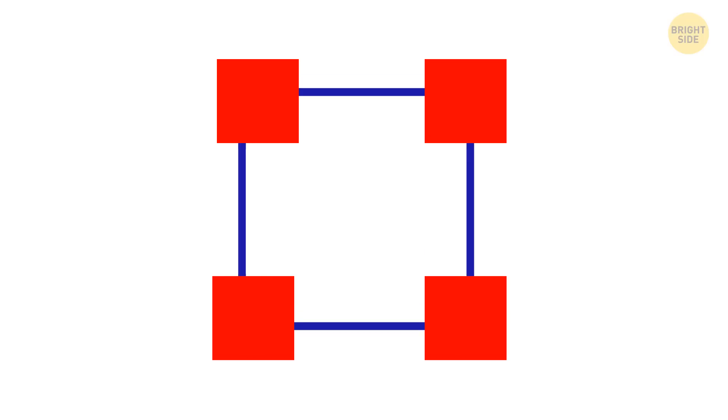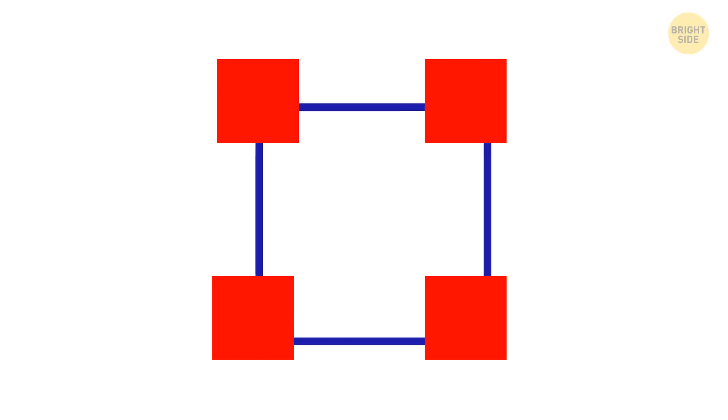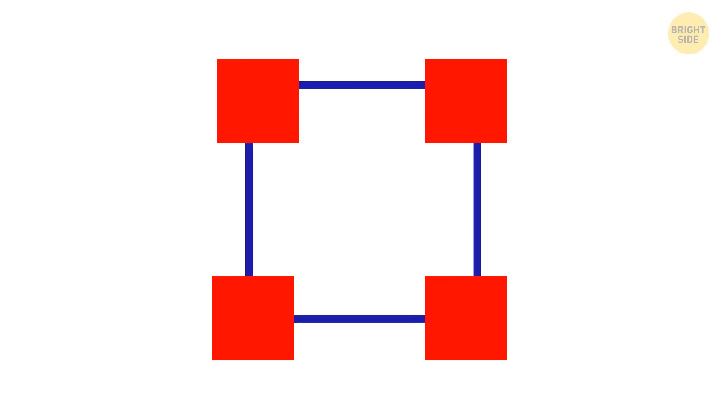This one's another example of a motion-binding illusion. These four bars seem to be moving in parallel with each other, right? Wrong! They are all part of the same moving square. Here's what's happening behind the scenes. Our brain just gets confused.